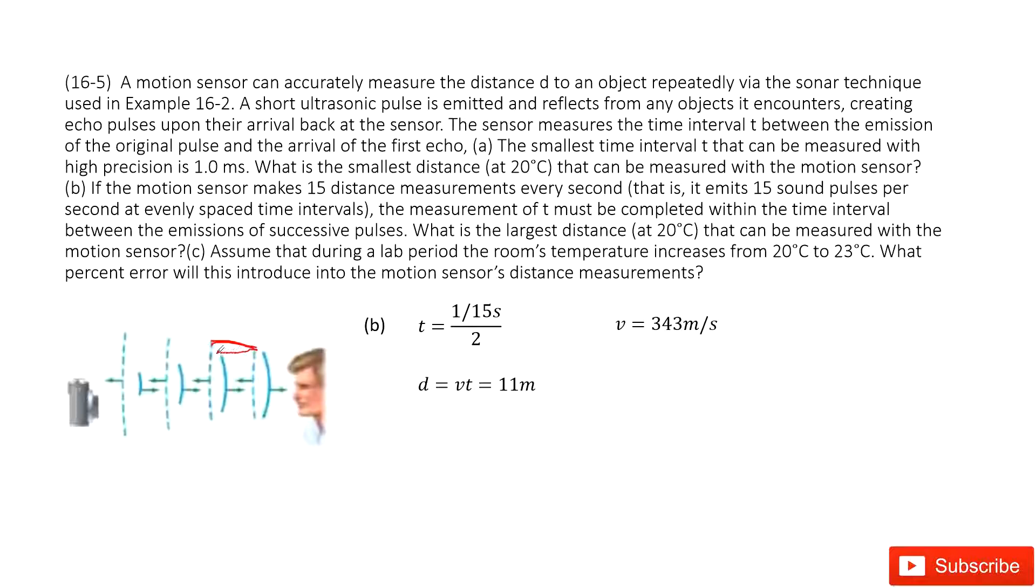For one distance, it moves from there and then back. So divided by 2, we get the time for one distance the sound travels. Still, the wave speed is 343 m per second. In this case, we can find d equal to v times t. Input the v and t inside, we get the answer there.